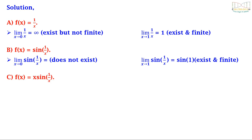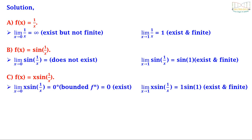For option C, f(x) = x·sin(1/x): the limit as x tends to 0 of x·sin(1/x) equals 0 times a bounded function, which equals 0 and exists. Also the limit as x tends to 1 of x·sin(1/x) equals 1·sin(1), which is existing and finite. So option C is true.